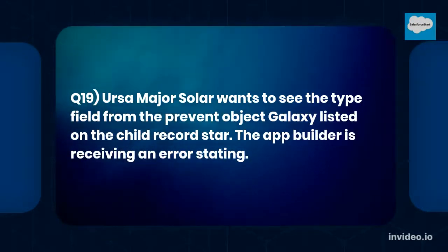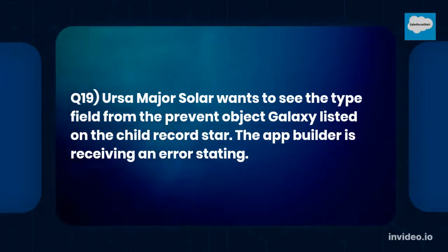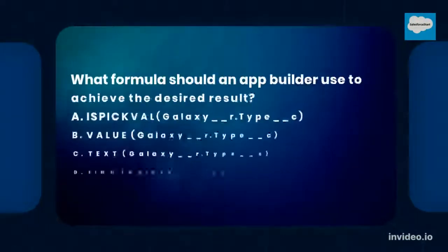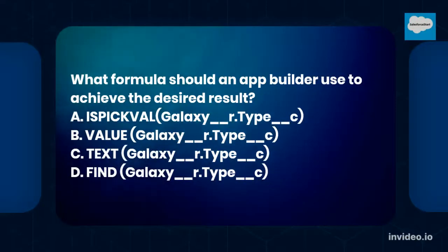Question number 19: Ursa Major Solar wants to see the type field from the parent object galaxy listed on the child record star. The app builder is receiving an error. What formula should an app builder use to achieve the desired result?